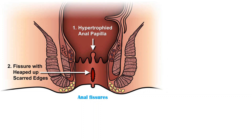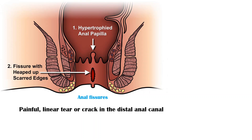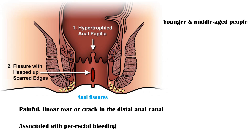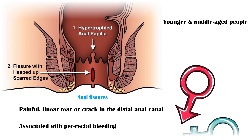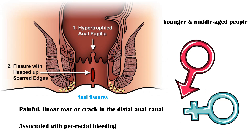An anal fissure is a painful, linear tear or crack in the distal anal canal, which is associated with perirectal bleeding. It commonly affects younger and middle-aged people. Fissures develop equally in both males and females.